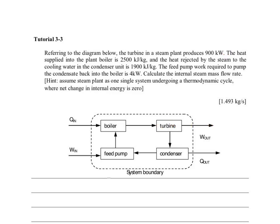Looking at the question, we need to calculate the internal mass steam flow rate. Remember, 900 kilowatts is because of a certain flow rate of steam. We're going to call it M dot, and that is our task - to find this M dot.